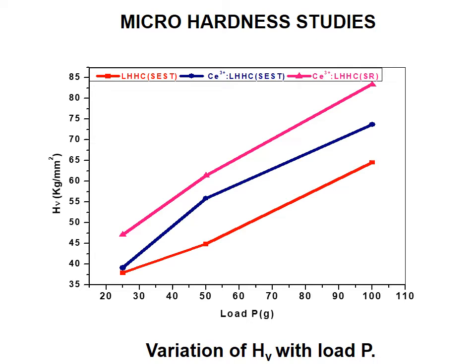Micro hardness studies: A graph is depicted between hardness value and load for doped and undoped single crystals. In pure and doped crystals grown by the SEST method, hardness increases with load up to P = 45 g and 56 g respectively. For SR-grown crystal, it is up to 61 g with no observed cracks. The enhanced hardness and mechanical strength of the crystal is due to the incorporation of CE3+ ion in the host lattice grown by the SR method.